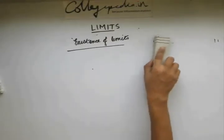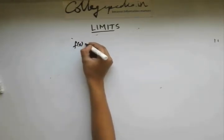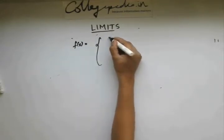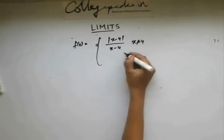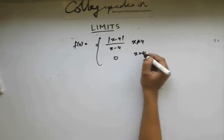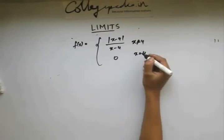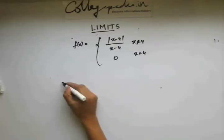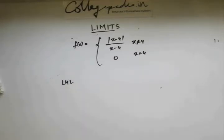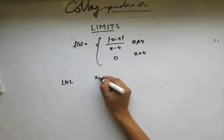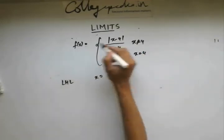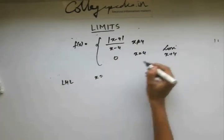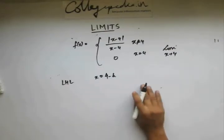The second condition is that both should have the same value. Let's take the first question: f(x) is given. First, let's find the left-hand limit. To find the left-hand limit, I'll take a value of x which is just less than 4, since I need to find the limiting value as x approaches 4.